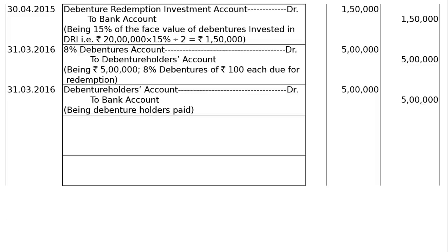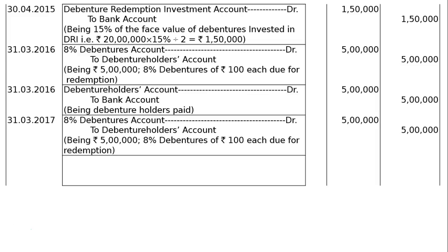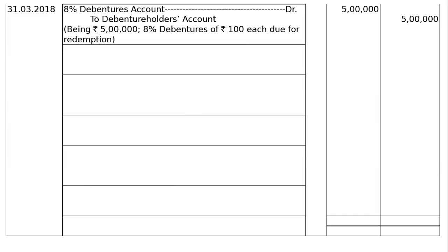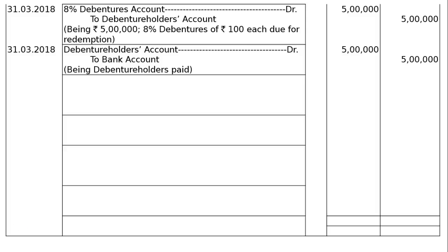These last two entries are repeated 4 times. On 31st March 2017: 8% Debentures account debited to Debenture Holders account — Rs 5,00,000 in debit and credit — being 8% debentures of Rs 100 due for redemption. Debenture Holders account debited to Bank account — Rs 5,00,000. On 31st March 2018: same entries — 8% Debentures account debited to Debenture Holders account — Rs 5,00,000 — and payment entry: Debenture Holders account debited to Bank account — Rs 5,00,000.